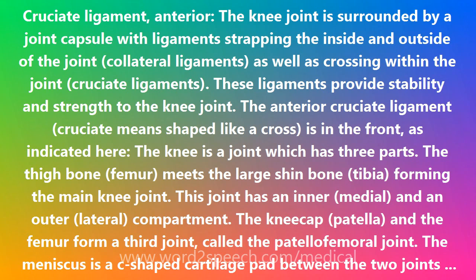The knee is a joint which has three parts. The thigh bone, femur, meets the large shin bone, tibia, forming the main knee joint.